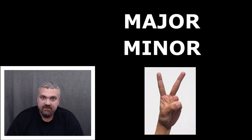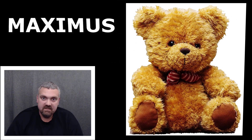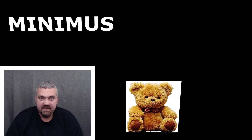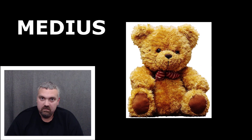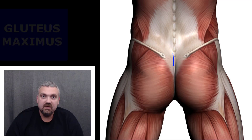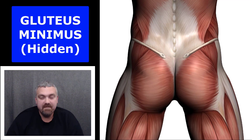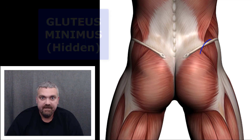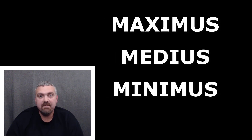We use major and minor if there are two muscles. But what if there are three? That's where we use the terms maximus, minimus, and medius. Maximus is going to be the largest of the three, minimus will be the smallest, and medius is right in the middle — kind of like Goldilocks. The best example here would be your glutes. The gluteus maximus is the largest gluteal or buttock muscle, the gluteus minimus is the smallest, and the gluteus medius is in the middle.